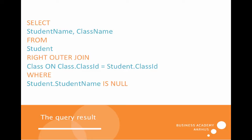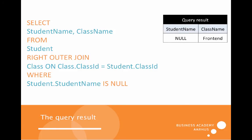That means: give me those classes where there are no students. You may think we could use an equal sign instead of IS, but in SQL that is not possible for this comparison. We need to use the reserved keyword IS to get those who are null. In this case we will get frontend, which is the class that doesn't have any students.